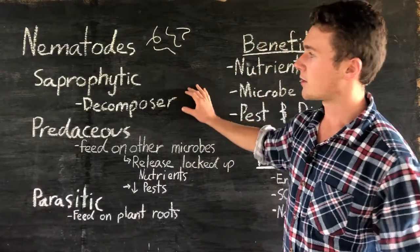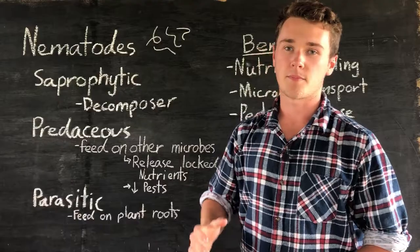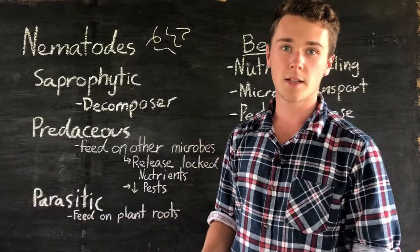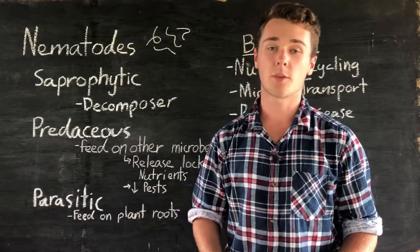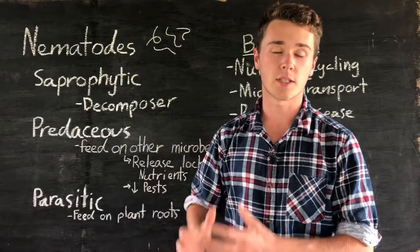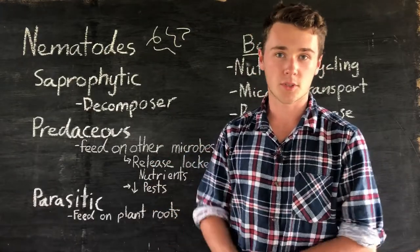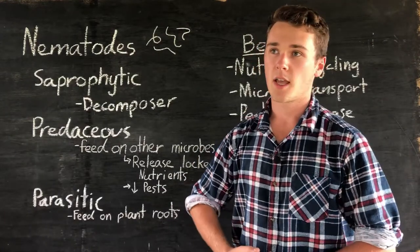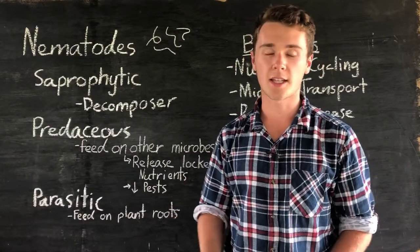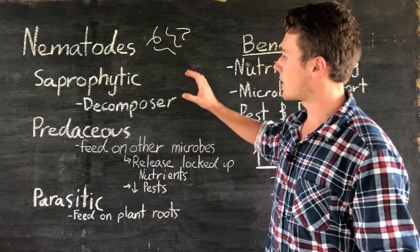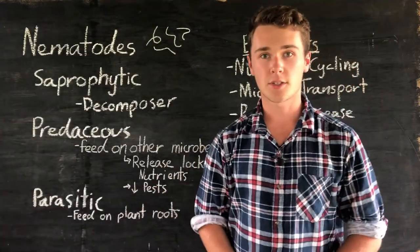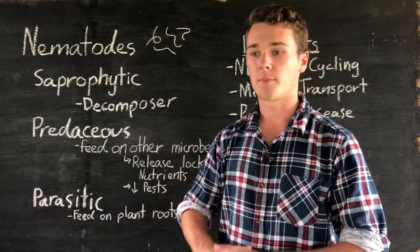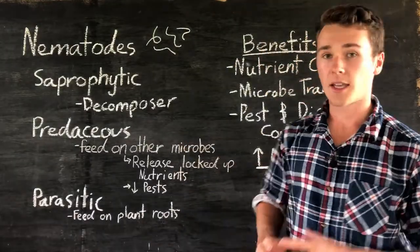We'll start off with saprophytics. These make up our decomposers in our soil for nematodes, so they break up organic matter into soil organic matter. As we know from the soil organic carbon video, decomposing organic matter releases nutrients to the soil. As well as this, increasing your soil organic carbon or matter rates will increase your water holding capacity, improve drainage and soil structure. So essentially they decompose and they increase the soil organic carbon, nutrient availability, and all the associated benefits from that.